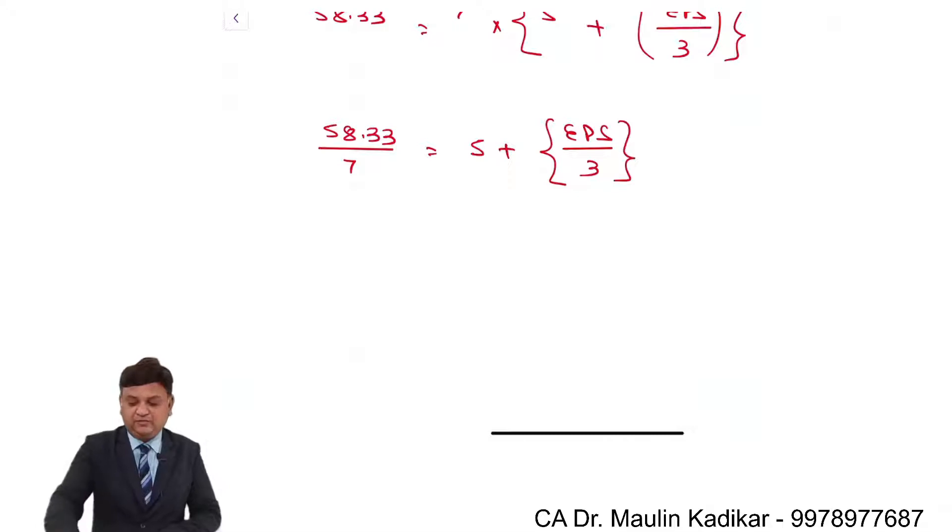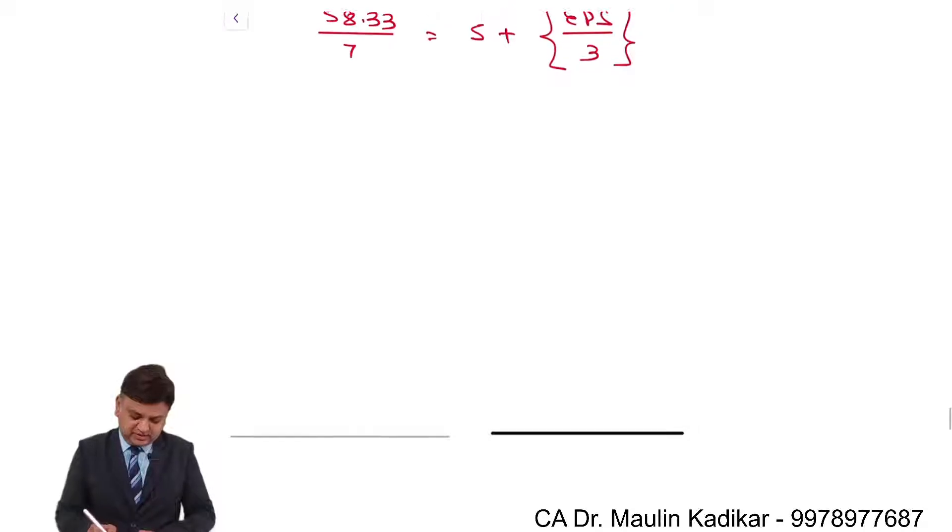So now what will happen, 58.33 upon 7, that comes to 8.33. So 8.33 minus 5 is equal to EPS upon 3.